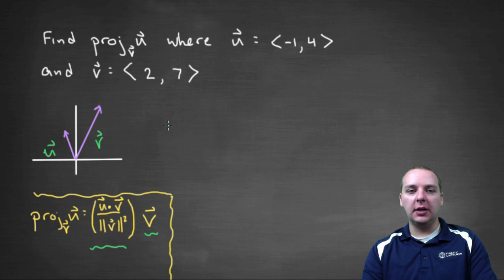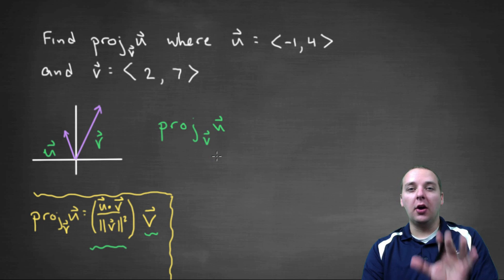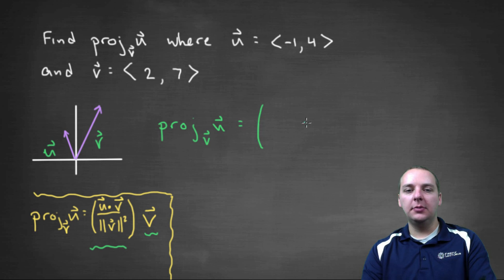So the way that we write projection is proj, and then we'll put the vector that we're projecting after the proj—it's almost like a function, almost like f(x). We're going to write the projection of u. So proj_v(u), where v is written as a subscript. The vector that you're projecting onto is always the subscript vector here. And it's going to be some scalar multiple of <2, 7>. So really the meat of the problem is just figuring out what the scalar should be.